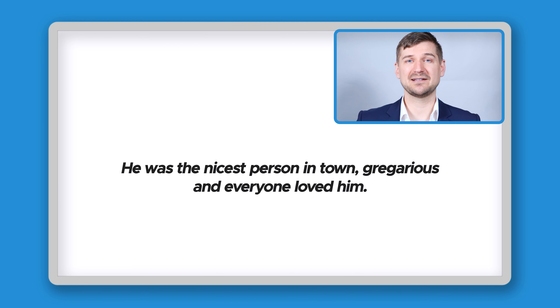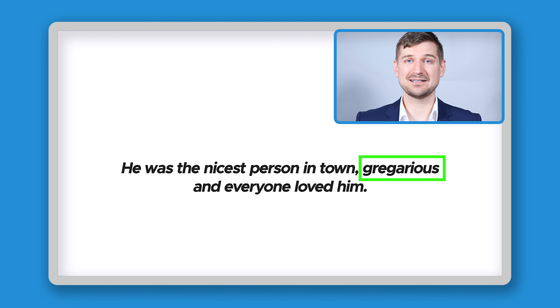For example, if you were reading a sentence which said that the character was the nicest person in town and that they were gregarious and that everyone loved them, you could probably understand from the context that the word gregarious means someone who is sociable, fond of company, or something similar. You may, however, wrongly guess that the word gregarious is simply another synonym for nice. But this wouldn't matter because you'd still have a mostly good understanding of the sentence and it wouldn't defeat your ability to generally understand what it means and what the character is like.